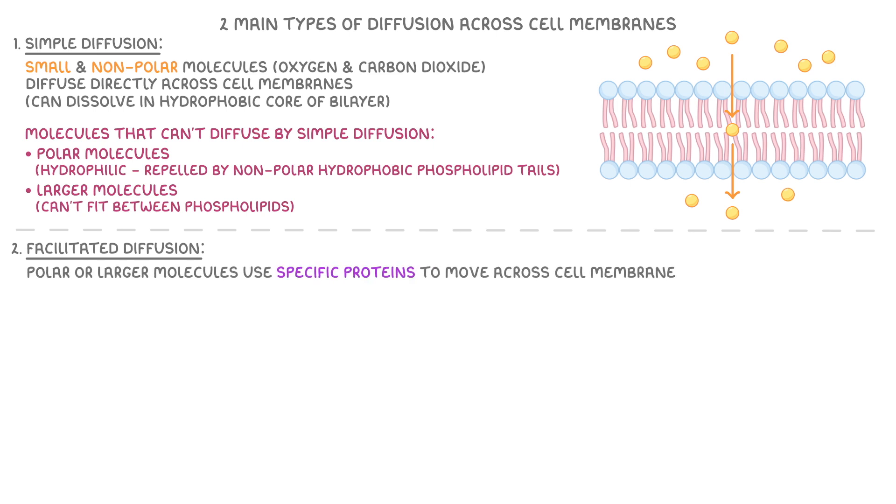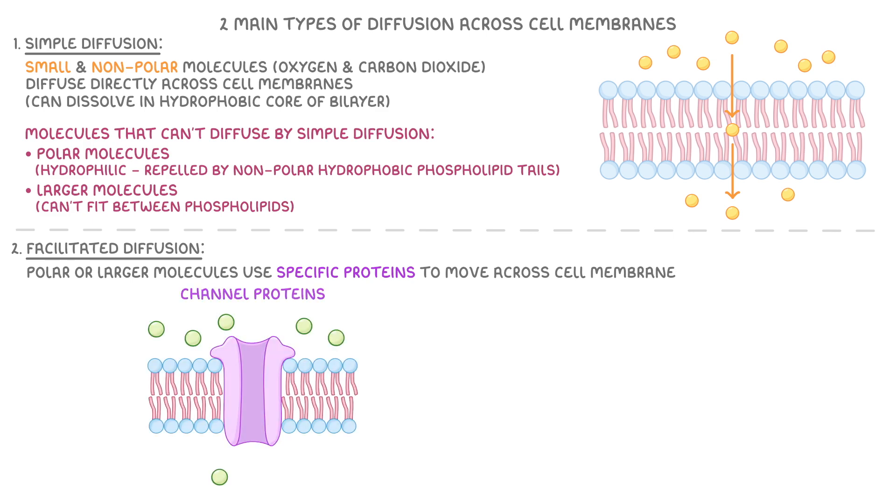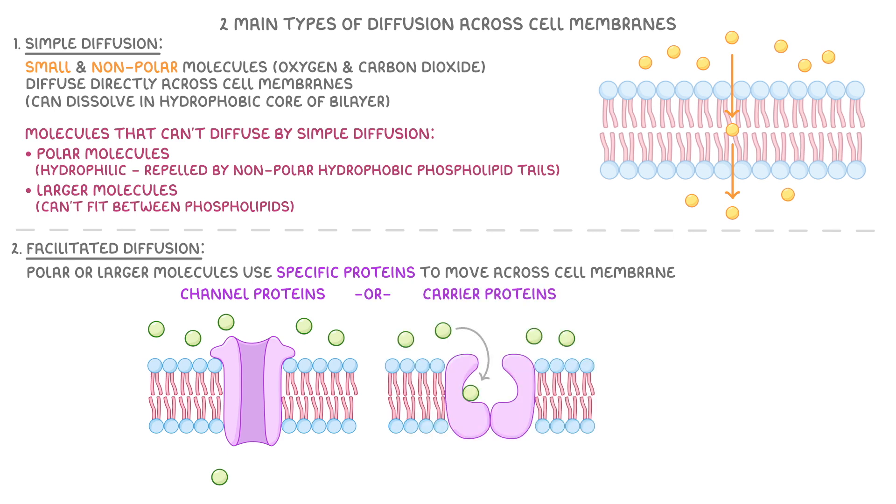And in this case, these polar or large molecules use specific proteins to move across the cell membrane. There are two types of proteins that might be involved: channel proteins or carrier proteins. Channel proteins form pores in the membrane that transport substances like certain ions, allowing them to pass through the cell membrane without interacting with the phospholipids directly.